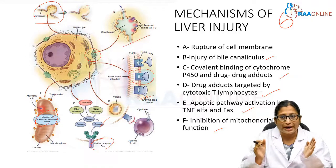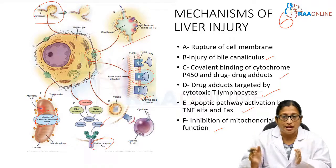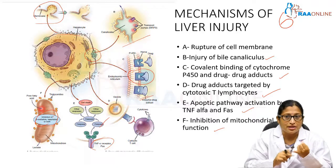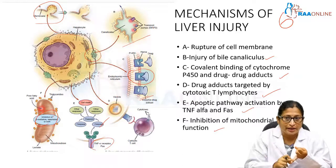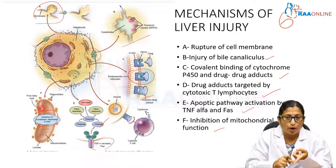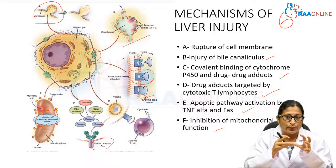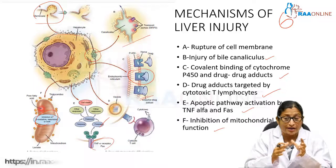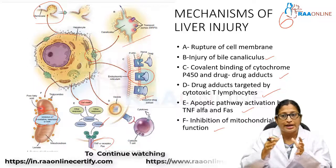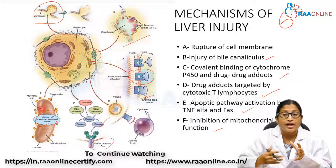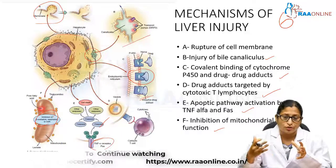In summary, these are the mechanisms by which various drugs cause liver injury: damage to the cell membrane, damage to the bile canaliculus, damage to the mitochondria, induction of apoptosis, covalent binding to cytochrome P450 enzymes forming drug adducts which inhibit enzyme activity, and stimulation of an immunological response by inducing cytotoxic T lymphocytes.